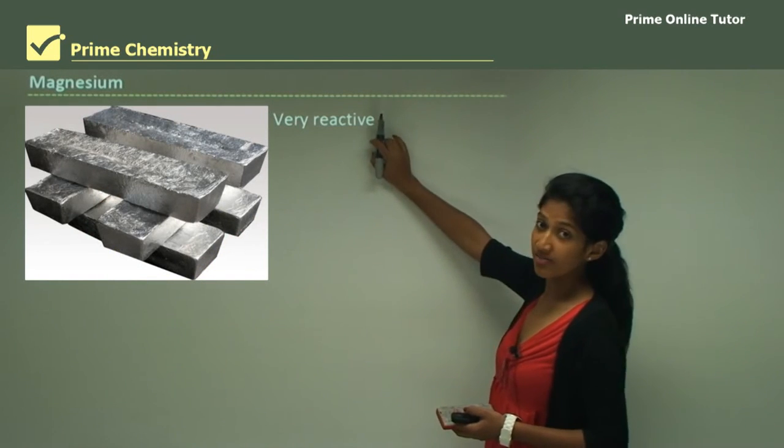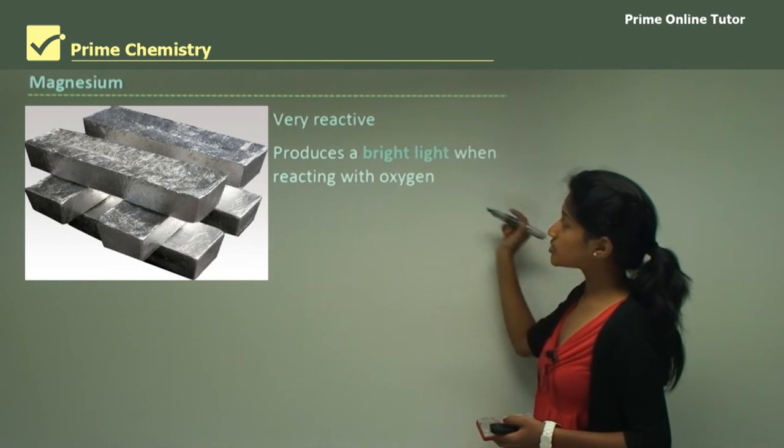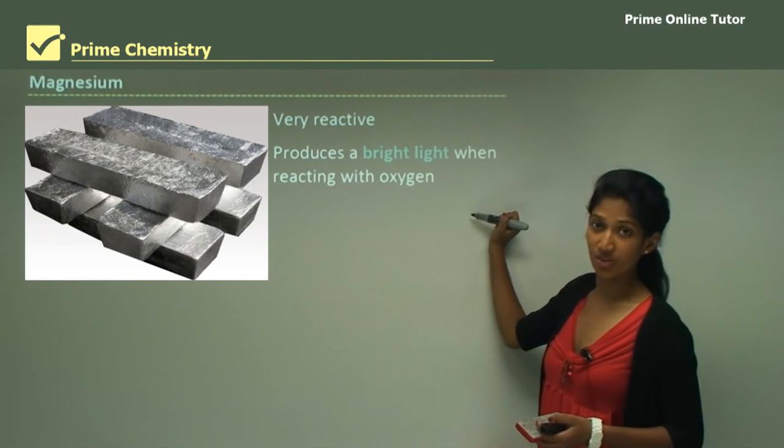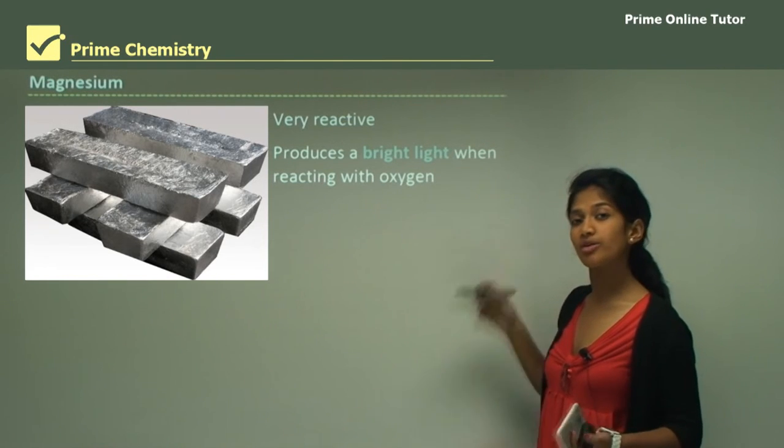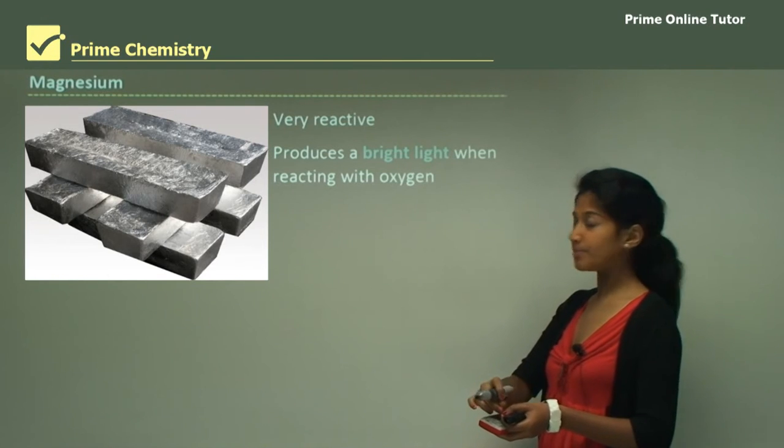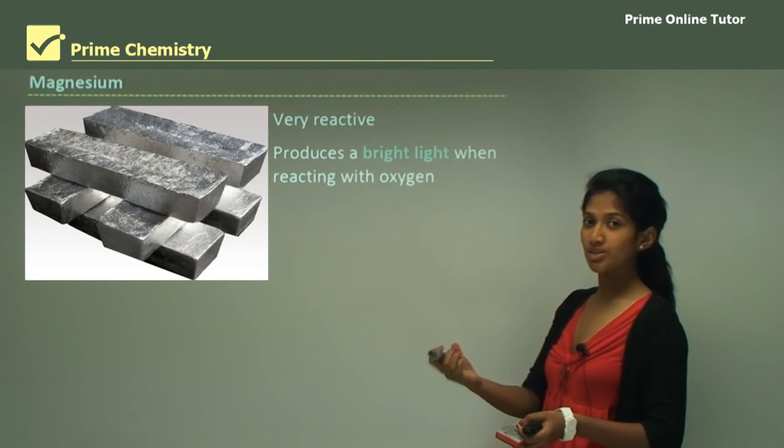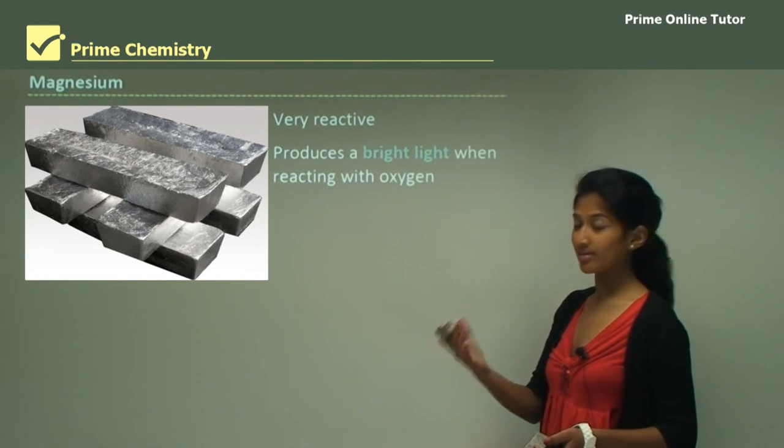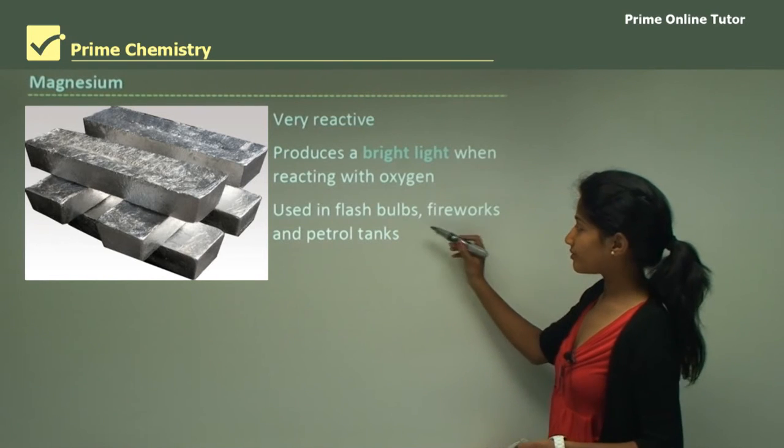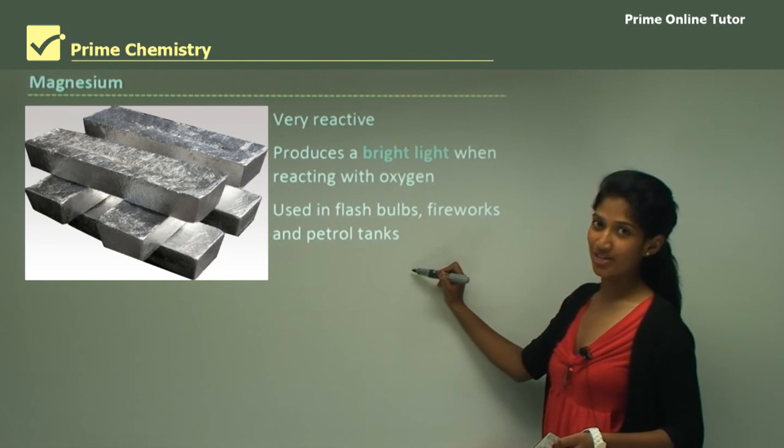Magnesium is very reactive and produces a bright light when reacting with oxygen. If you have done that experiment in school where you burnt magnesium strip, you would see a very bright light coming. Magnesium is used in flash bulbs, fireworks and petrol tanks.